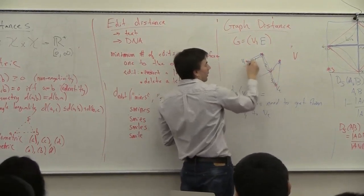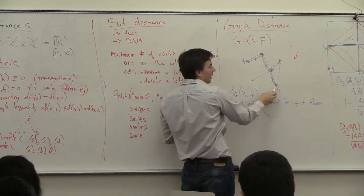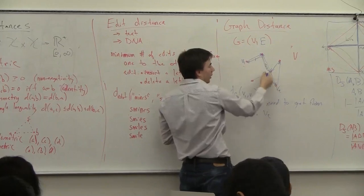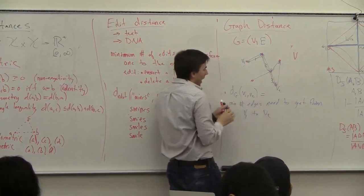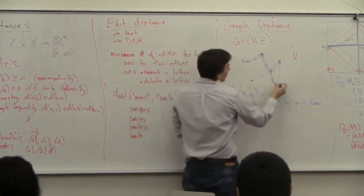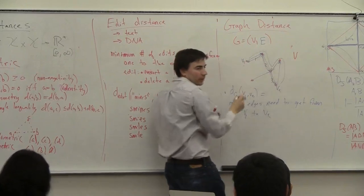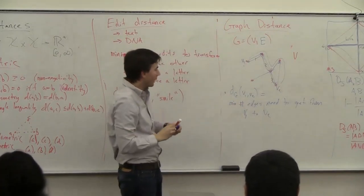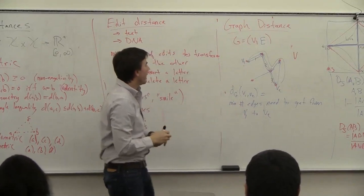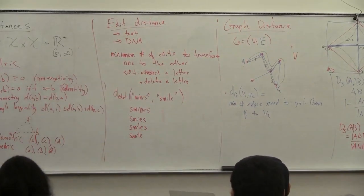But to get back, you can only go along these edges in one direction, so you have to go this way and then you have an extra fourth step. If you have a directed graph, then this does not have the property of symmetry.